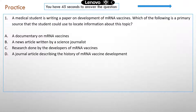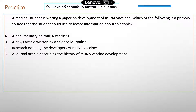Question one: A medical student is writing a paper on the development of mRNA vaccines. Which of the following is a primary source the student could use to locate information about this topic? Option A: a documentary on mRNA vaccines. It's likely that the people who produce this documentary are not the researchers who actually study mRNA vaccines, so this is a secondary source.